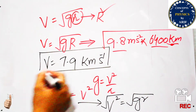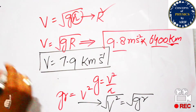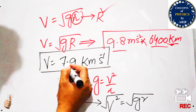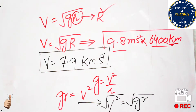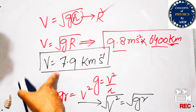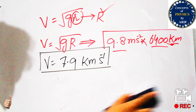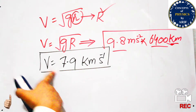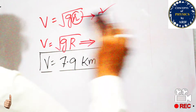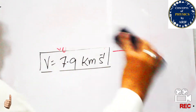This critical velocity is the minimum velocity needed to release a body so that it can go into the earth's atmosphere and become an artificial satellite. We now need to calculate the time period — how much time the object takes to complete one orbit at this velocity.